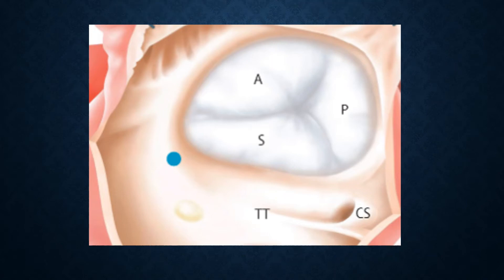Tricuspid valve usually has three leaflets, including anterior, septal, and posterior. Septal leaflet is the longest leaflet, anterior is the largest leaflet, and posterior is the smallest leaflet.